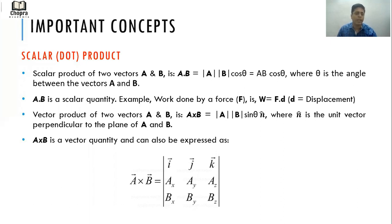Vector product of two vectors A and B is equal to |A||B|sin θ n̂. What is n̂? n̂ is the unit vector perpendicular to the plane containing A and B. How do you find A cross B? A×B is a vector quantity and is given in the form of a determinant: first row has î, ĵ, k̂; second row has Ax, Ay, Az, the components of A; and third row has the components of B. So it's very easy to open it up.